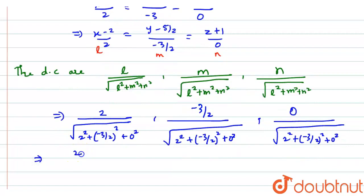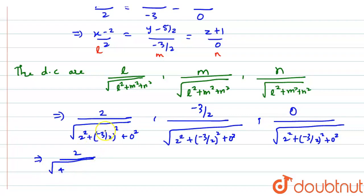I will have 2 divided by — well, 2 squared is 4. And (minus 3 by 2) squared: the negatives cancel, so 3 squared is 9, giving plus 9 by 4.